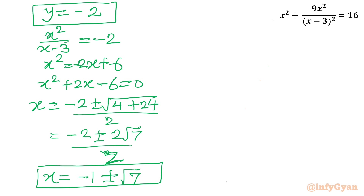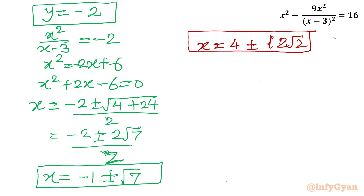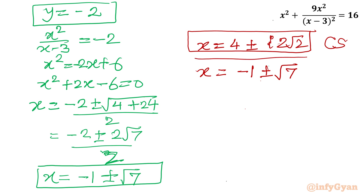So our final solutions are: two complex solutions x equals 4 plus or minus i times 2 root 2, and two real solutions x equals minus 1 plus or minus square root of 7.